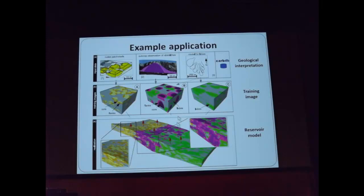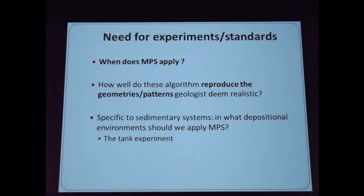There are some fundamental questions. When does MPS apply? When do we use multiple-point geostatistics? It's not a given. It's not because we developed it at Stanford that everyone has to use it. There are other techniques — surface-based and even process-based — that could apply. When should we apply those and when should we apply MPS? As geostatisticians we often use geostatistics by default, but it doesn't have to be. Also, how well do these algorithms actually reproduce patterns, and how do we have quantitative methods to judge this?